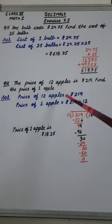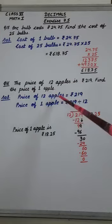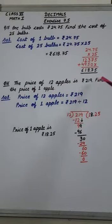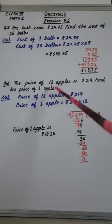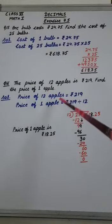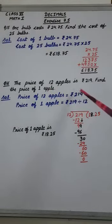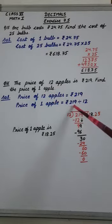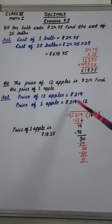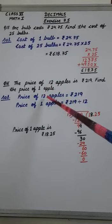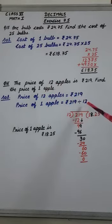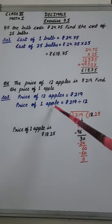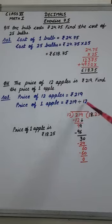In this question price of 12 apples is given rupees 219 and we have to find the price of one apple. So for that we have to do division. Total price is 219 divided by total number of apples 12. Then we will find the price of one apple.